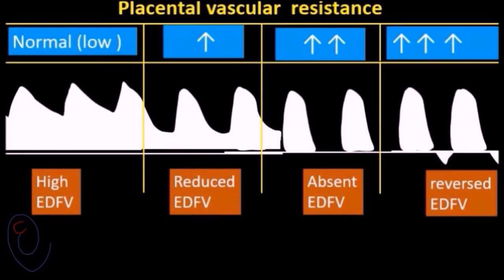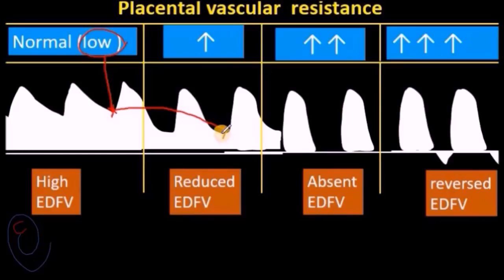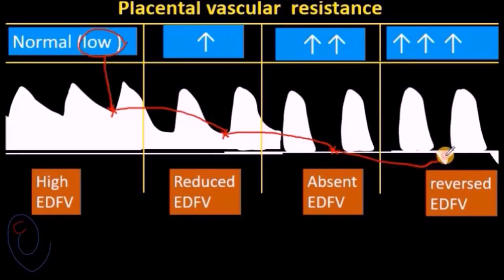To summarize: with low placental vascular resistance in healthy pregnancy, the end diastolic velocity is high. But with increasing placental resistance, it will decrease, then become absent, and finally it will be reversed.